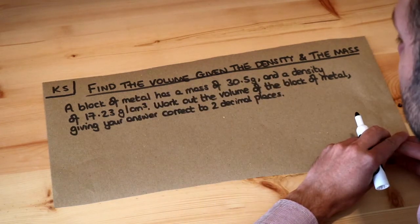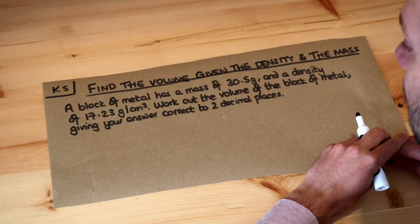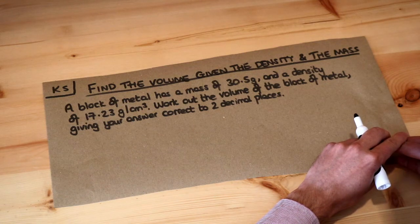A block of metal has a mass of 30.5 grams and a density of 17.23 grams per centimeter cubed. Work out the volume of the block of metal, giving your answer correct to two decimal places.